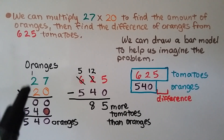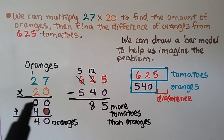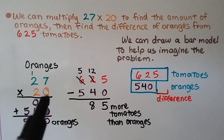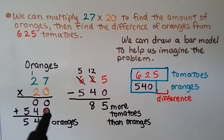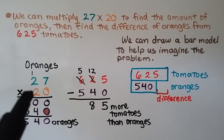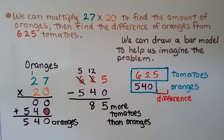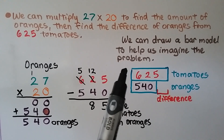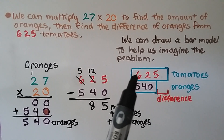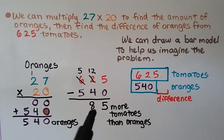For oranges, we multiply 27 times 20. Starting in the ones place, 0 times 7 is 0 and 0 times 2 is 0 — think of it as 0 times 27, so both place values are 0. Now we have 2 tens times 7, which is 14 tens. We regroup the 1 and write the 4 down. Then 2 tens times 2 tens is 4 tens, plus 1 more ten is 5 tens. We have 540 oranges. Drawing a bar model, he has 625 tomatoes and 540 oranges. We subtract and find there were 85 more tomatoes sold than oranges.